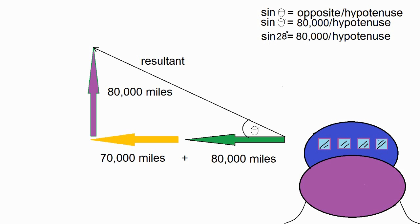The sine of 28 degrees is equal to 80,000 divided by the hypotenuse. I would then divide both sides by the sine of 28 degrees and multiply both sides by the hypotenuse. I would then get the equation the hypotenuse is equal to 80,000 divided by the sine of 28 degrees or 170,000. That means if we go directly to Earth, it would take 170,000 miles instead of 80,000 plus 80,000 plus 70,000 or 230,000 miles. So the direct route would save us 60,000 miles.